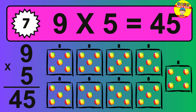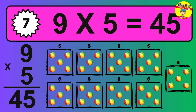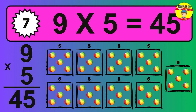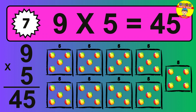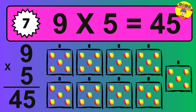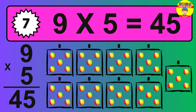The answer is nine times five is 45. To calculate, we have nine groups with five balls each one. So how many balls do we have? 45 balls.